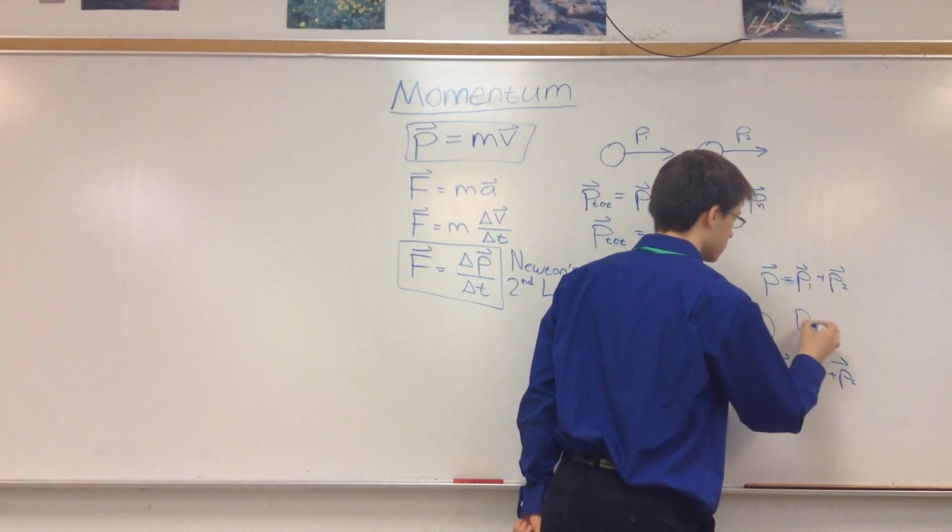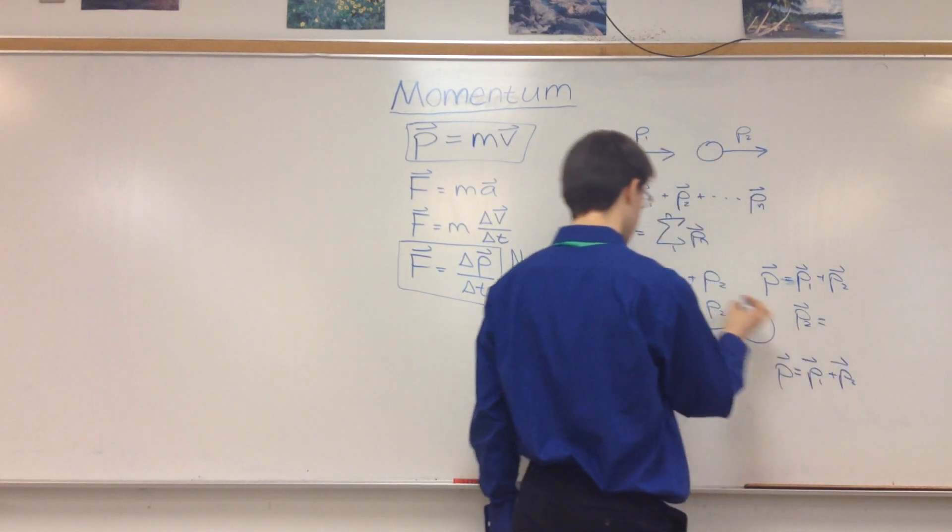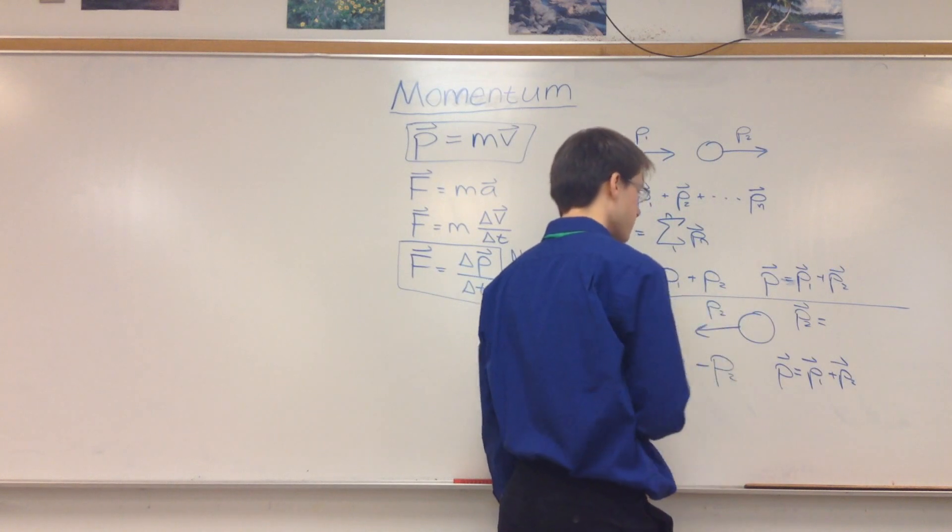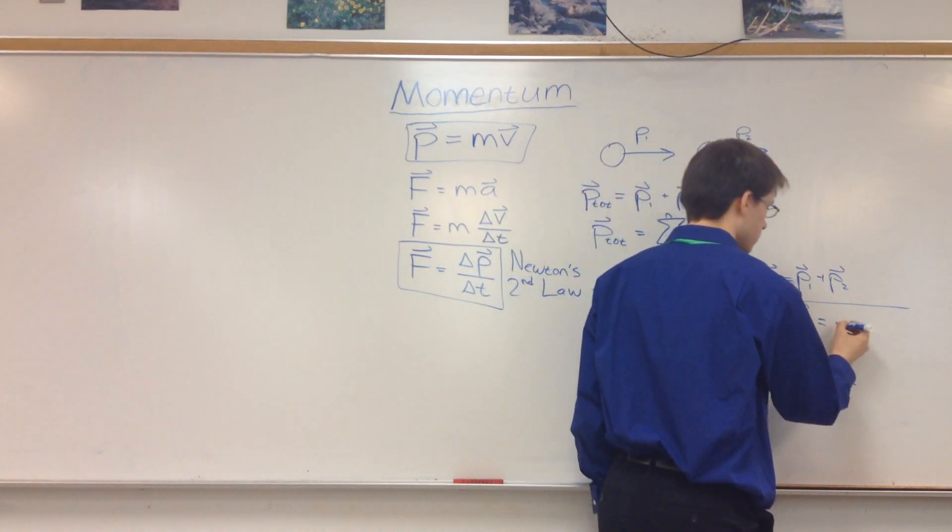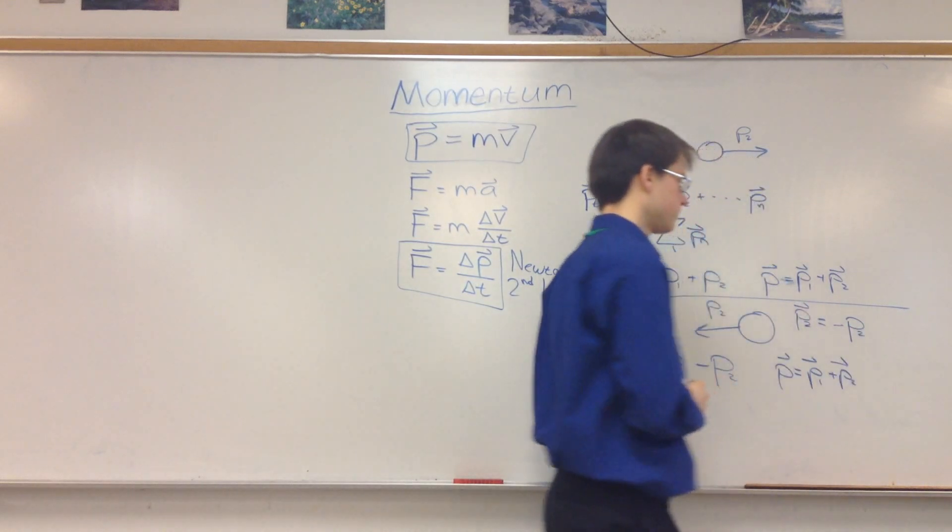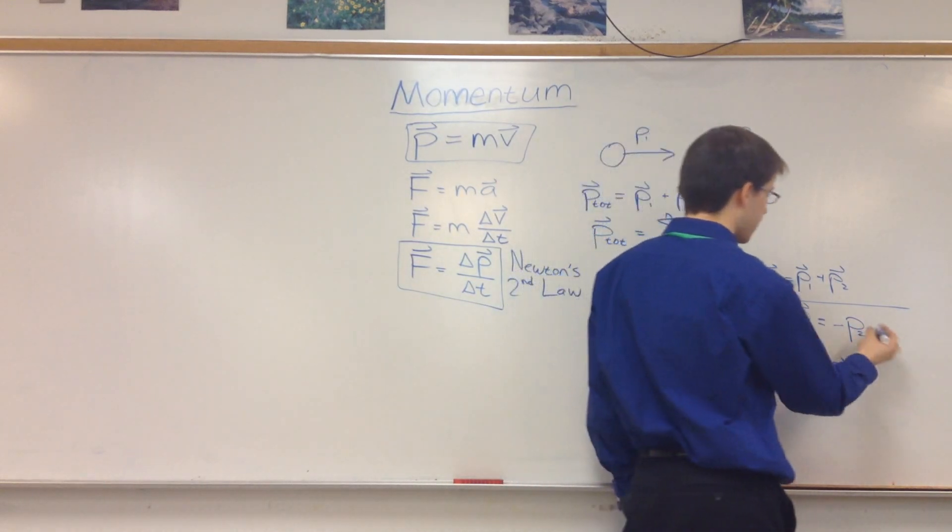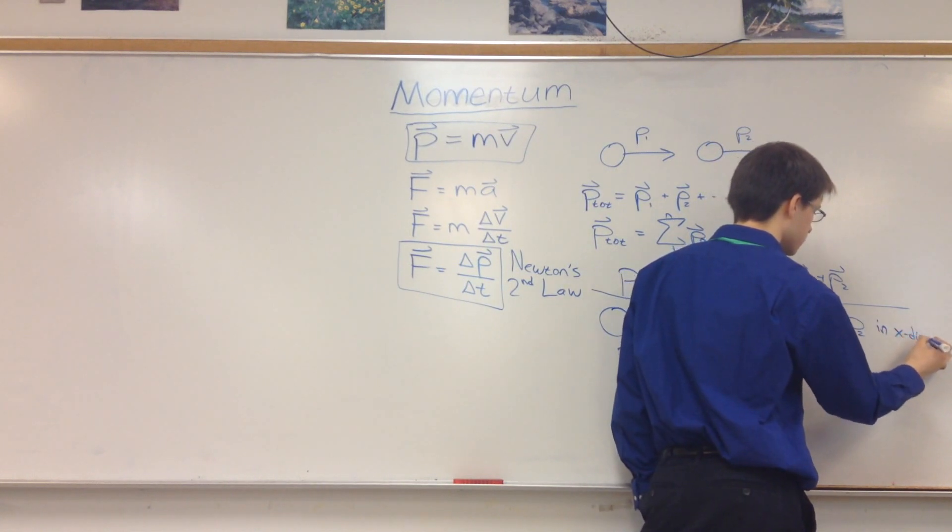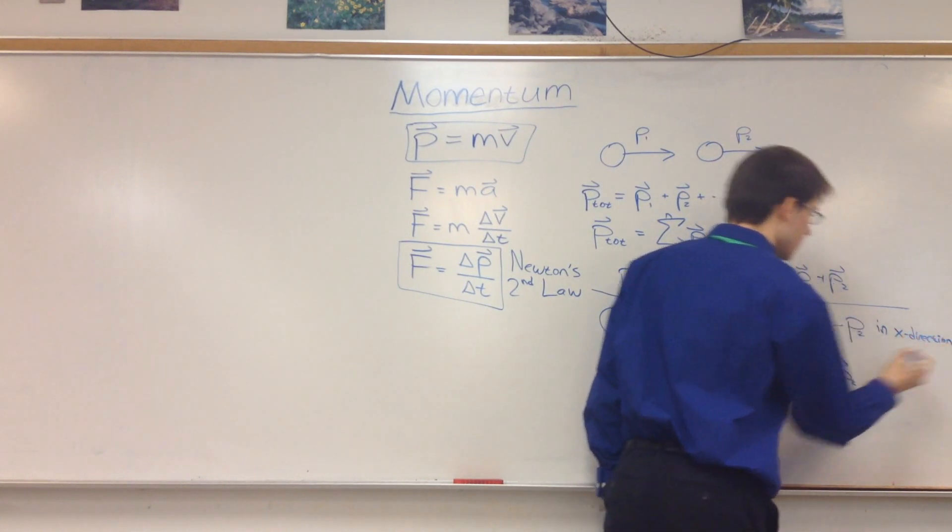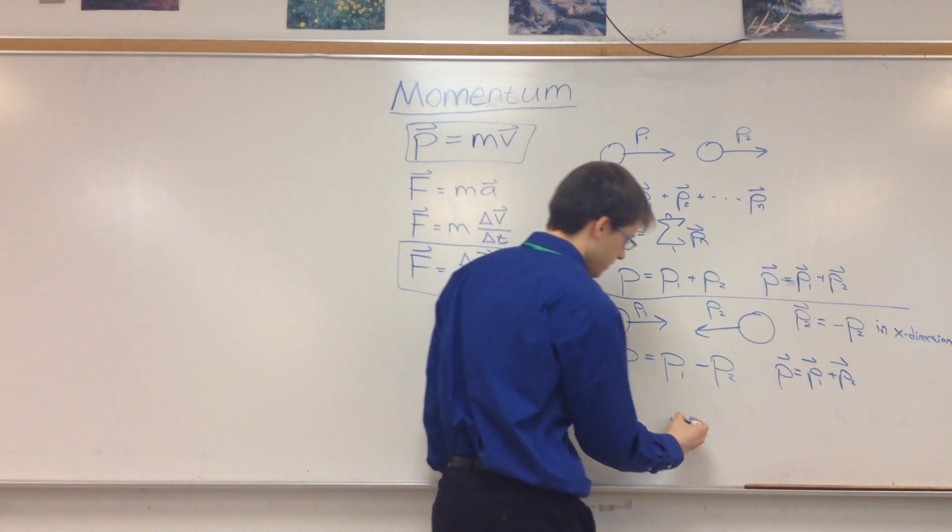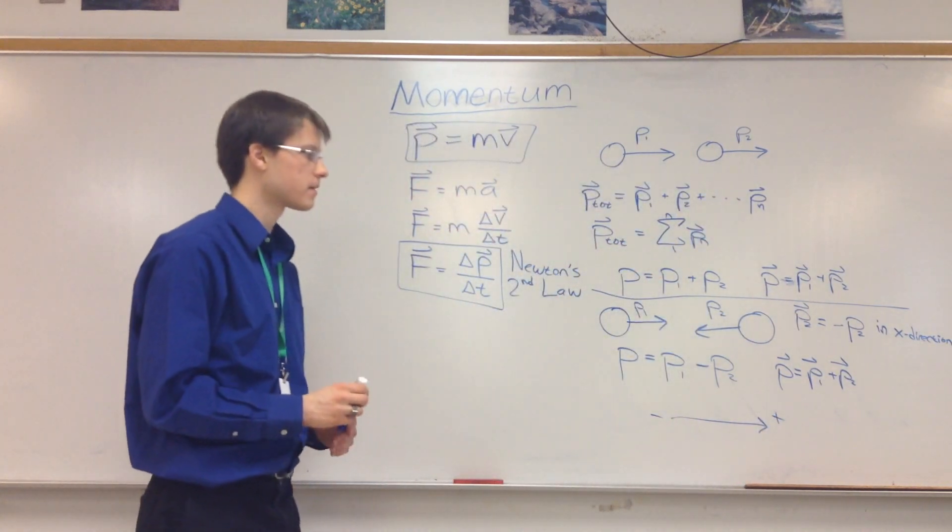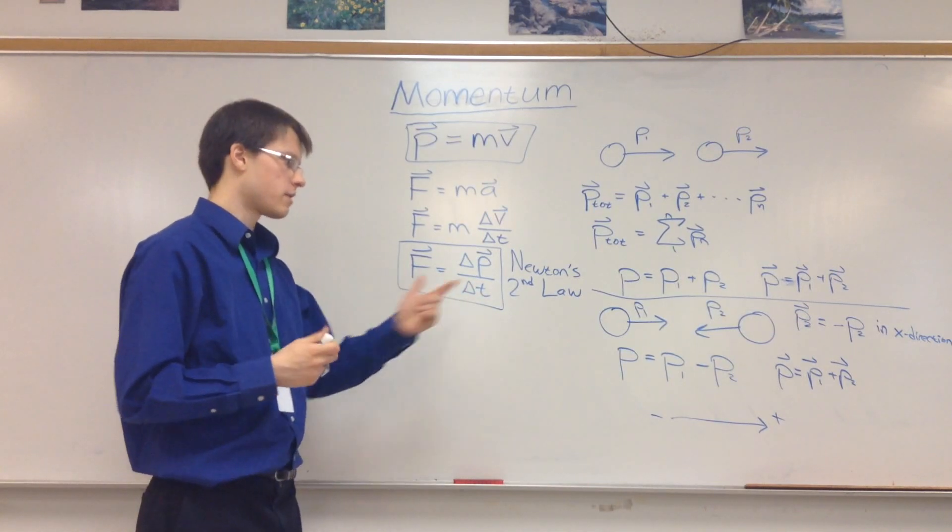for this case, draw a line and separate these. For this case, the vector P2 is equal to negative P2 in the x direction. And this is under the assumption that right is positive and left is negative. Okay? So that's why we write that.